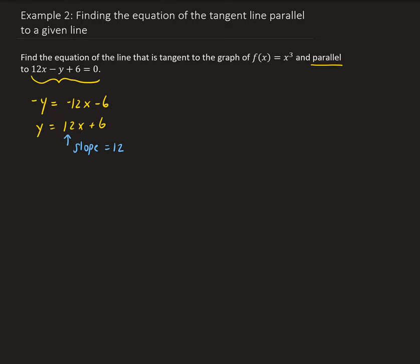So now, going back to our function, we can use the derivative. We can take the derivative and set it equal to the slope, and that will give us the location of where this tangent line is to the graph of f. So we're going to set the derivative of f and then set that equal to 12.